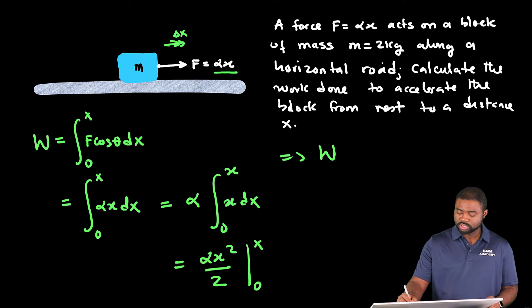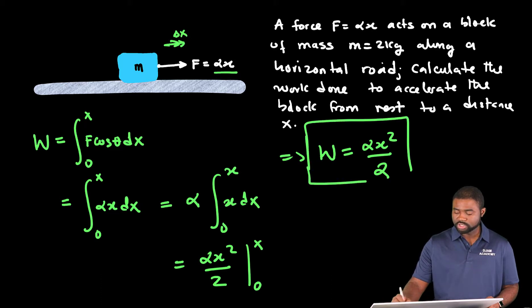This would mean that the work done will be equal to alpha x squared all divided by two. Now this is the work done to accelerate the object from rest, and keep in mind that alpha is greater than zero, it is a positive constant.